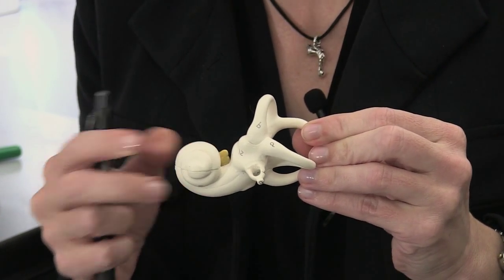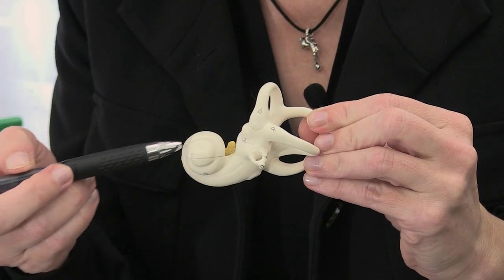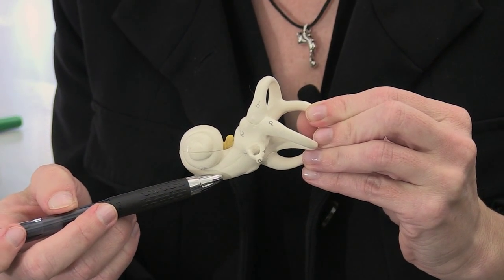This is a model of the inner ear, and there are actually six organs in the inner ear. The snail-shaped cochlea is here, and this is the hearing organ.